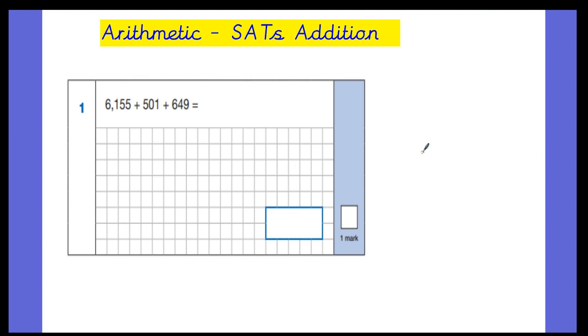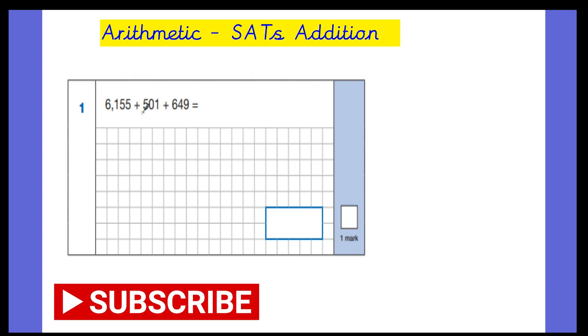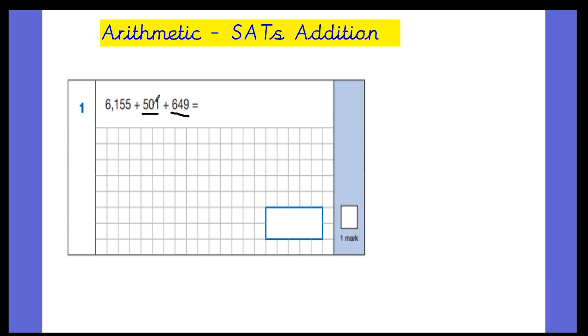The first question is actually the first question from the paper itself: 6,155 + 501 + 649. There's a few different ways to answer this question, but looking at the numbers you might have noticed a relationship between this number and this number. So a quick way for the children to attempt this is to see that 501 and 649, if I compensate and use the 1 here to add to the 49, that's going to make 50.